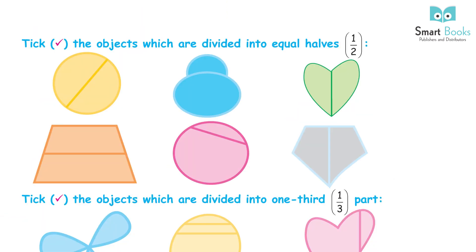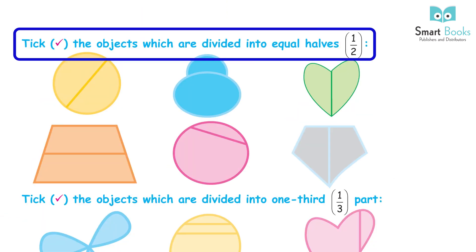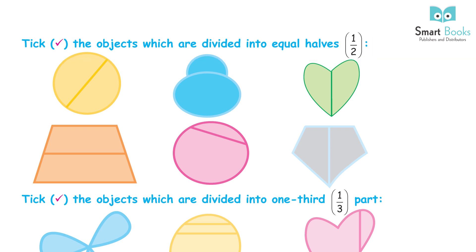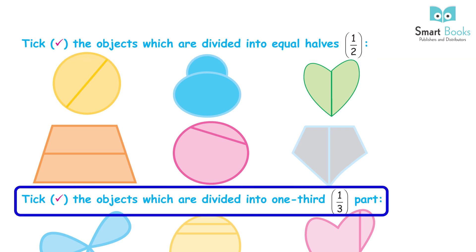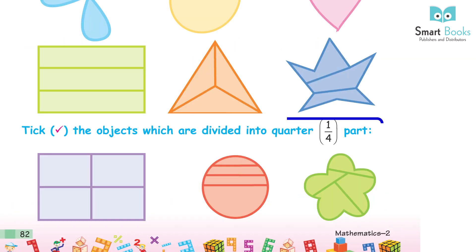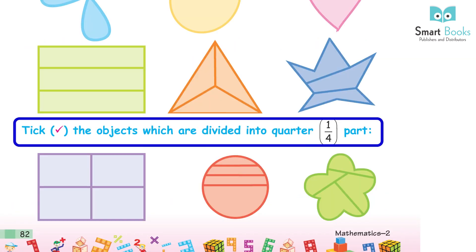Take the objects which are divided into equal halves. Take the objects which are divided into one third part. Take the objects which are divided into quarter part.